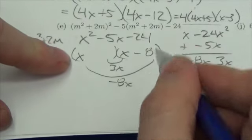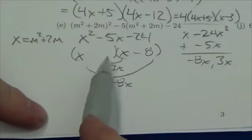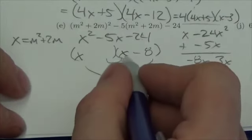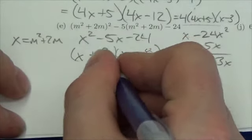And then to get the outside products here have to be negative 8x. Well, there's the x. So back here has got to be negative 8. The inside two products here have to be 3x. Well, there's the x. So this has got to be the positive 3.